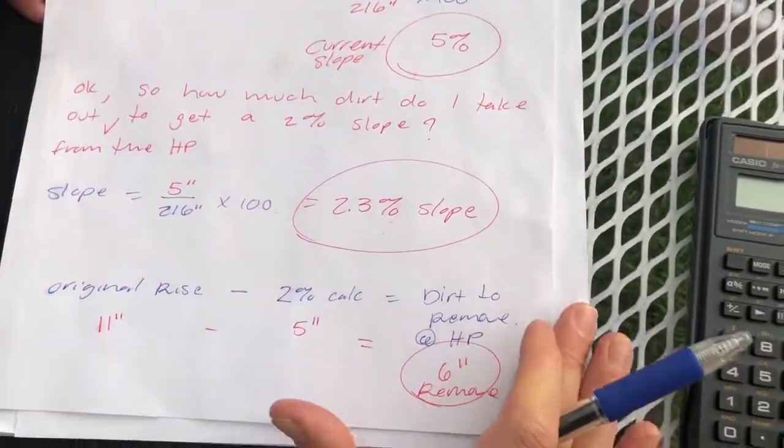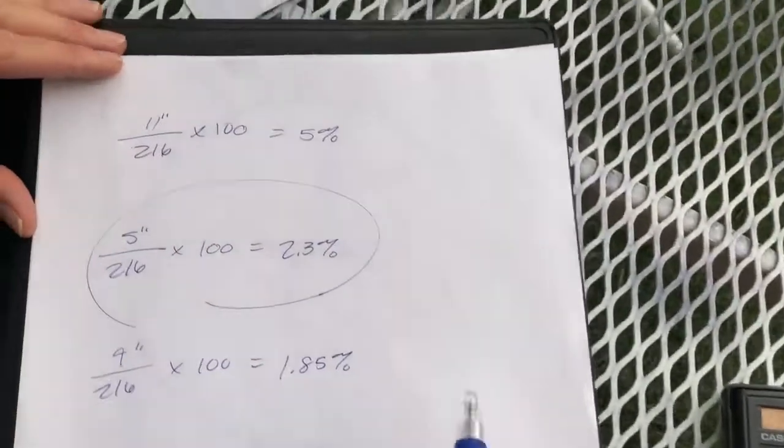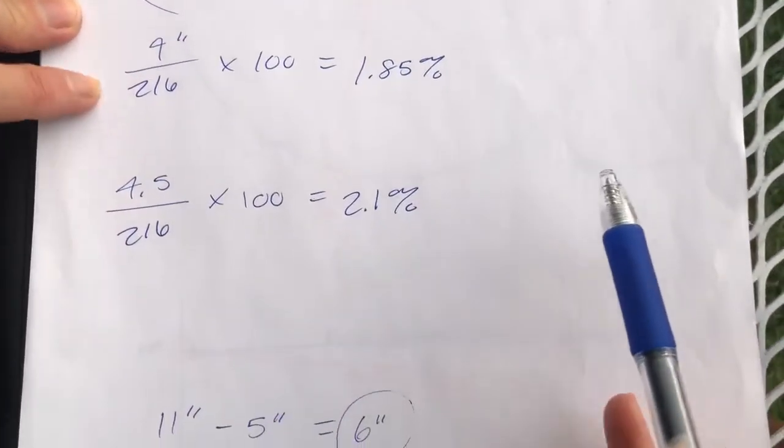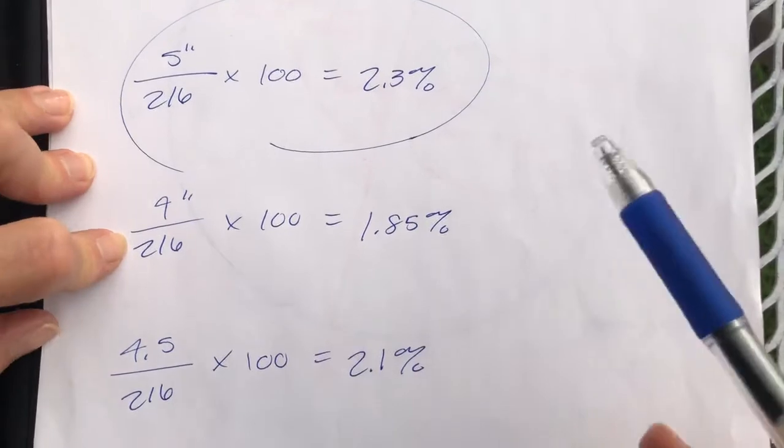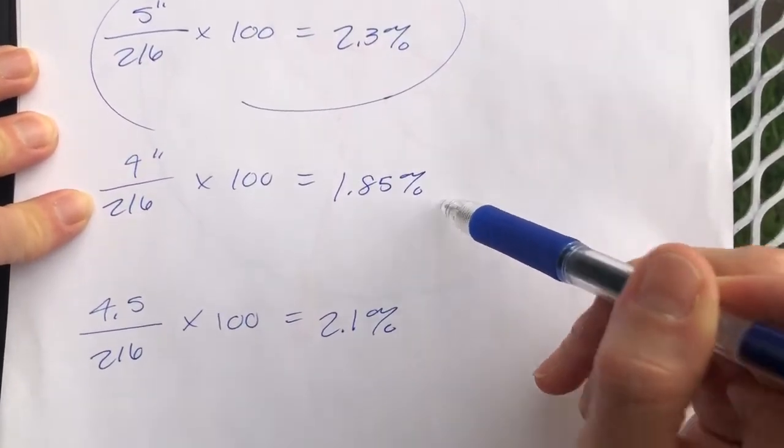This is a process of experimentation. You can see on this sheet that I've done it with 5 inches, 4 inches, and 4.5 inches. 4 inches gets us a 1.85% slope—that's too low, don't go with that. It has to be a minimum of 2%. 4.5 inches gets us a 2.1% slope, which is really close.